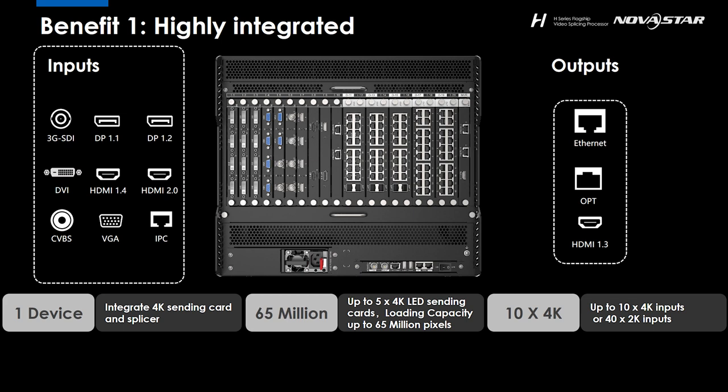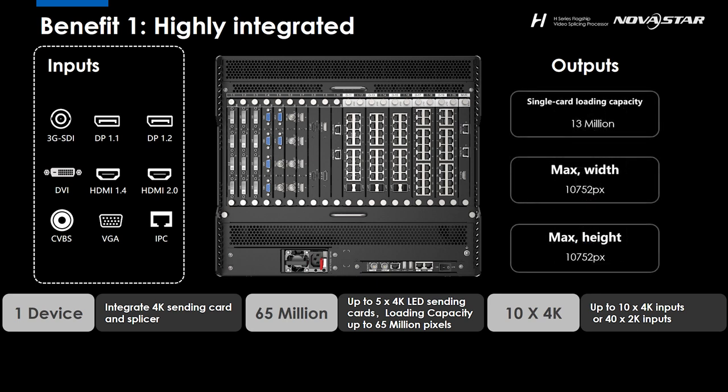H9 has both a 4K splicer and 4K sending card integrated. 10 channels of 4K inputs are supported, equivalent to 40 channels of 2K inputs allowed at the same time. The type of video feeds may vary from analog signals like VGA or CVBS to digital signals like SDI, DVI, HDMI, and so on. As for output performance, it is capable of loading an 8K display — but it can do way more. In fact, it can load up to 65 million pixels. An 8K screen's total resolution is around 33 million pixels, so the input and output capacity is more than enough for current projects.